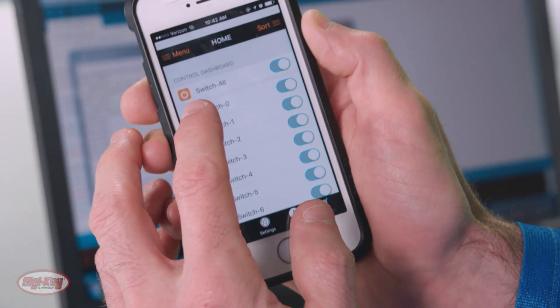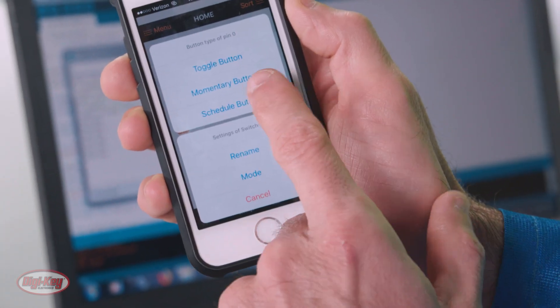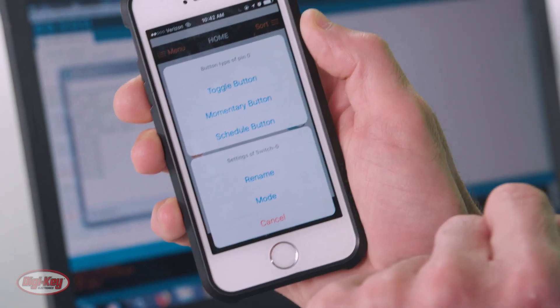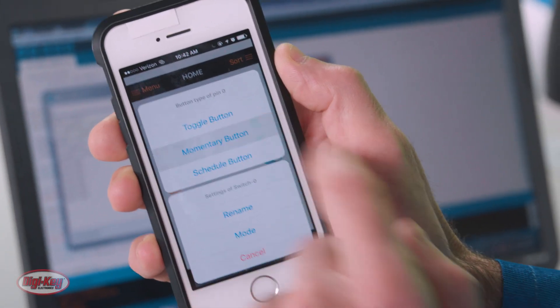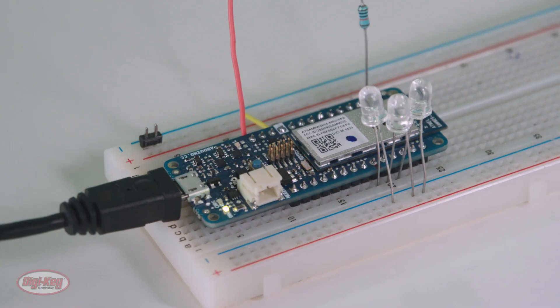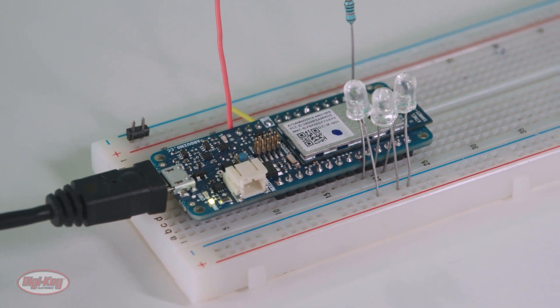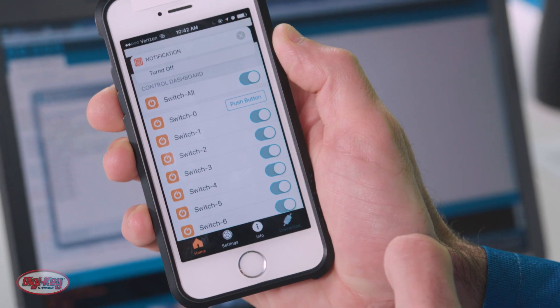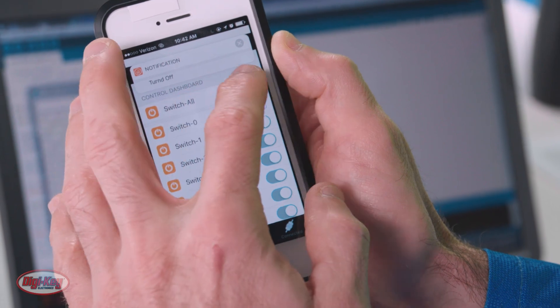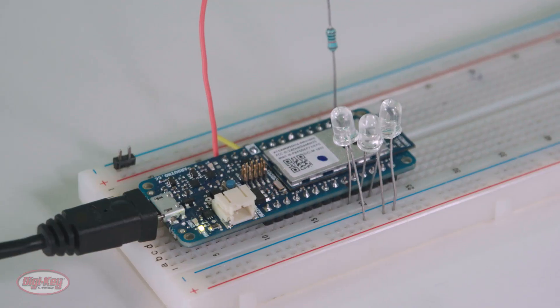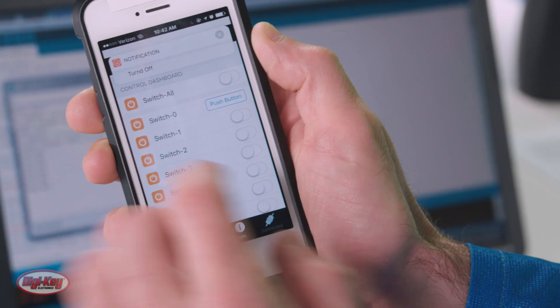And we click over here, we can do a moment. So right now they're set as a toggle button, but we can set it up as a momentary button. So now we press it down, and the LEDs turn on. And if we turn them all off, again, we can see the one LED being turned on there.